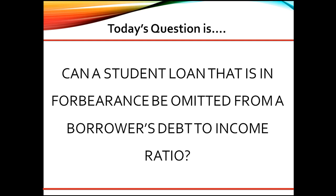Freddie Mac and FHA will allow for a 0.5% payment to be calculated and used. In the event the lender is able to obtain verification of the fully amortized payment from the loan servicer, they may use that payment instead. The lender is allowed to use the lesser of those calculations in qualifying the borrower.